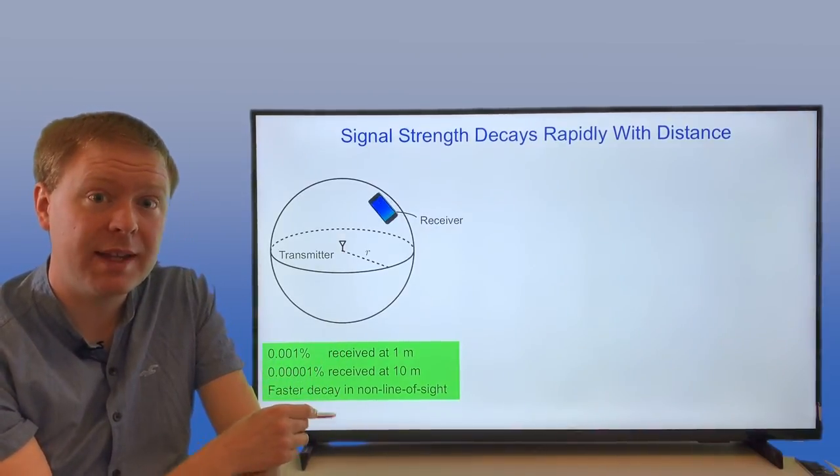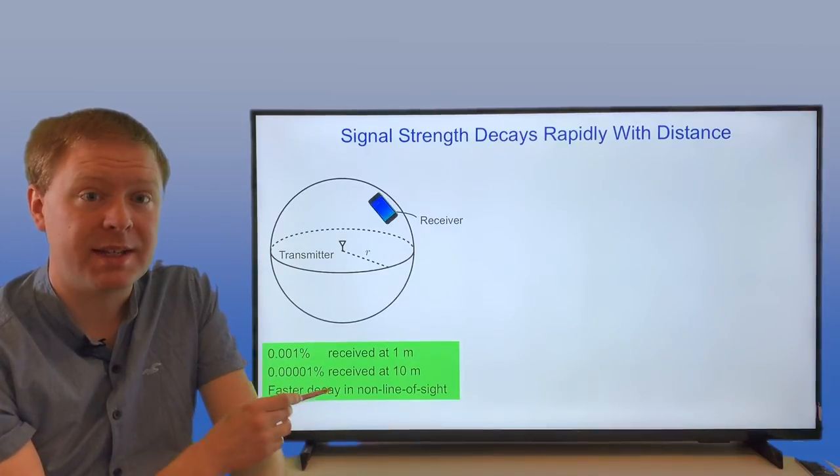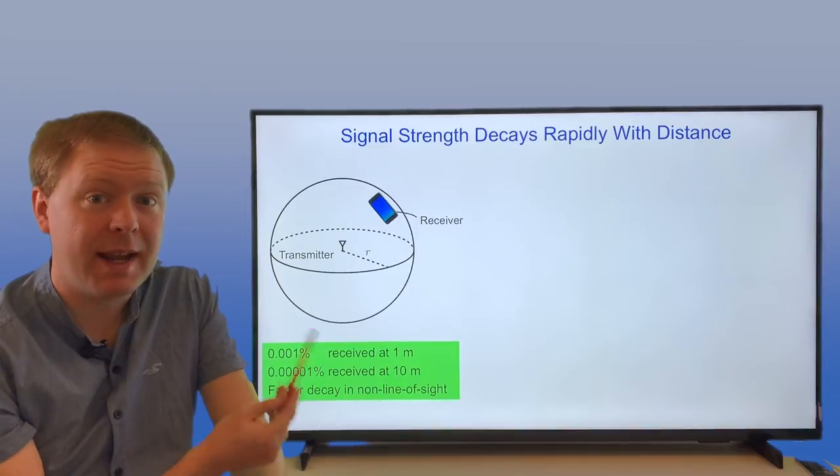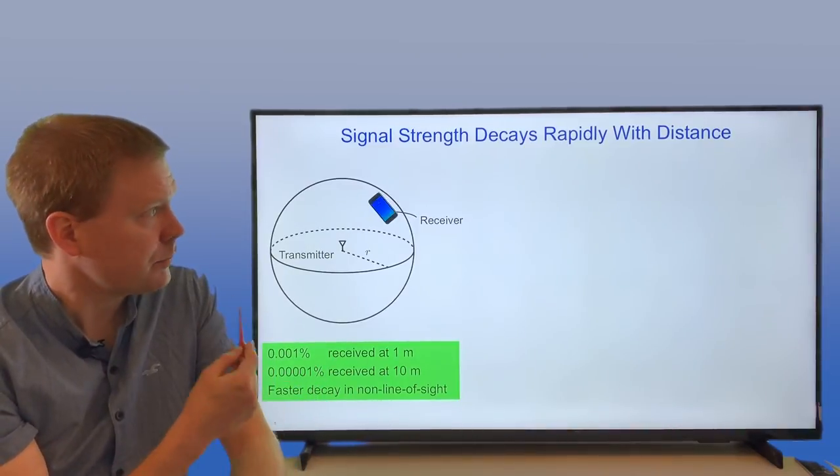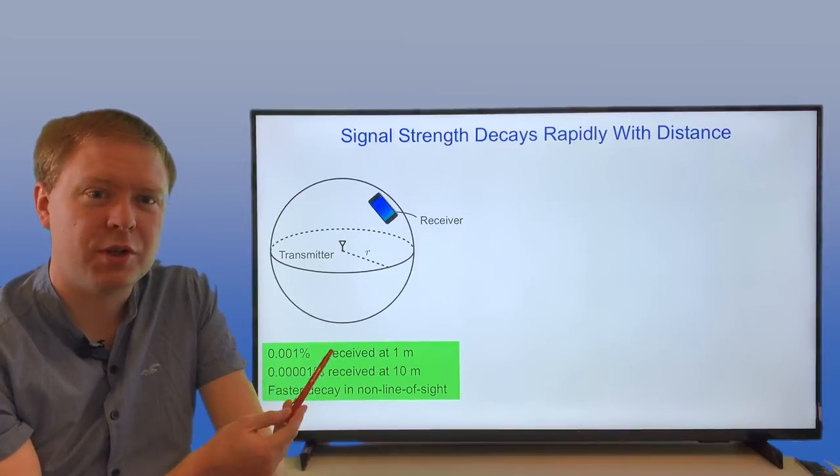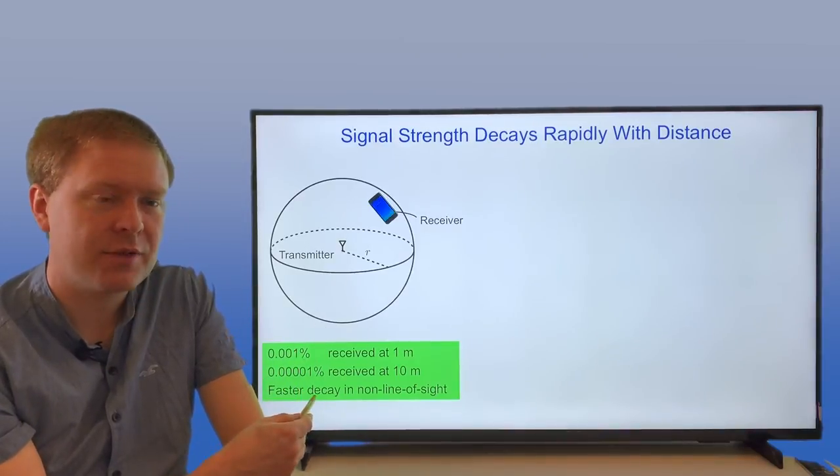The important thing here is that this power is decaying very quickly, and in many cases when you're not in line of sight, it decays even more quickly than this. So what are possible solutions to take care of something like this?